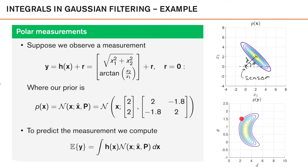Now, computing and describing p of y analytically is rather complicated. So in order to compute the expected value of y, we instead make use of the distribution of x and the mapping h of x. So we write the expected value of y as this integral, where we have h of x times the Gaussian density of x with parameters x-hat and p dx. Now, the question is, how can we solve this type of integral?